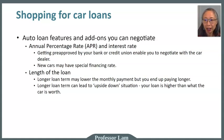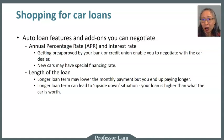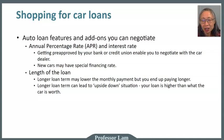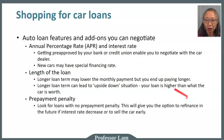An upside-down situation can be a serious problem. For example, if you get into an accident, your insurance will pay the lost value of the car — but if your loan amount is greater than the car's value, you're still on the hook for the difference. Even if your car is totaled and insurance pays out, you'd still owe money to the bank. So be very careful about taking out a loan that is substantially longer than the expected life of your car. Also, always look for loans with no prepayment penalty, which gives you the option to refinance if interest rates drop or if you want to sell the car early.